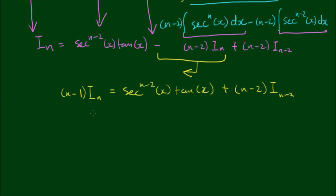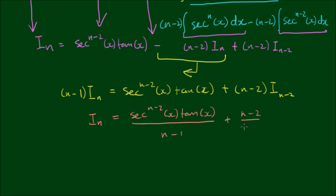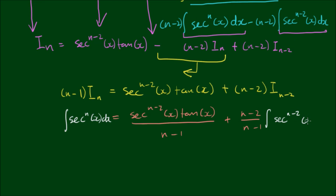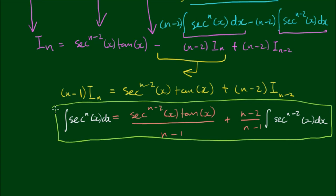Dividing both sides by n minus 1 isolates iₙ on the left-hand side. The result is: iₙ equals sec to the n minus 2 power times tan x, divided by n minus 1, plus n minus 2 over n minus 1 times i of n minus 2. Here iₙ is the integral of secant to the nth power with respect to x, and i sub n minus 2 is the integral of secant to the n minus 2 power of x with respect to x. Thus we have derived the reduction formula for the integral of powers of secant x.